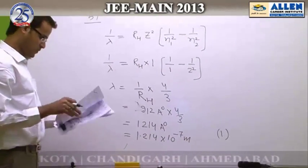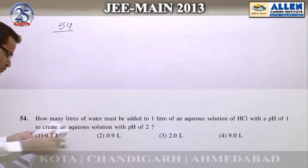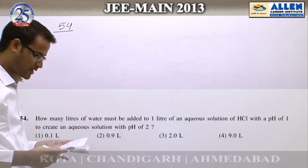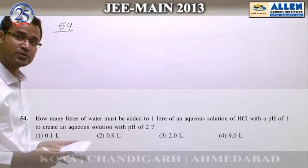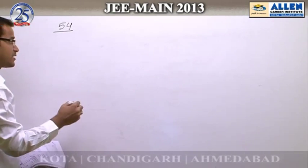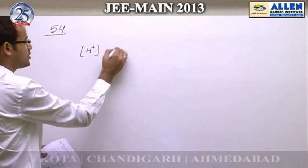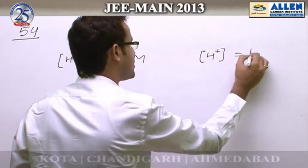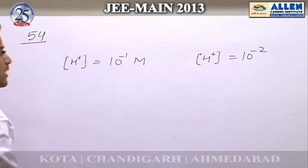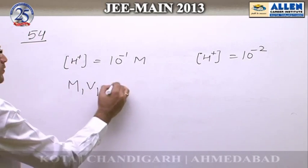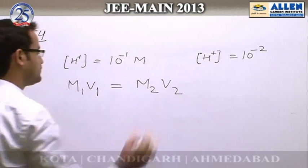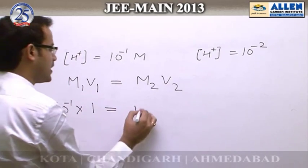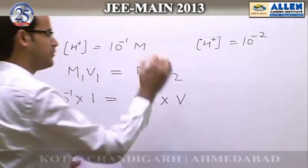Question number 54: To determine the amount of water that must be added to dilute a solution from pH 1 to pH 2, first calculate the H⁺ ion concentrations. Initial H⁺ concentration is 10⁻¹ M and final H⁺ concentration is 10⁻² M. Using M₁V₁ = M₂V₂, with initial concentration 10⁻¹ and initial volume 1 liter, and final concentration 10⁻², we find the final volume.